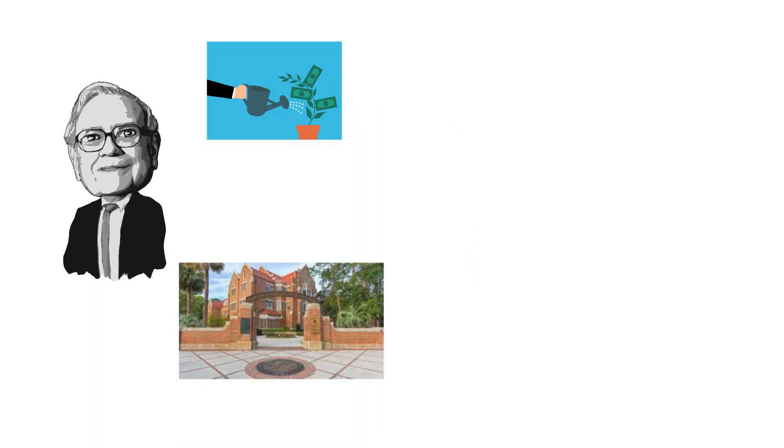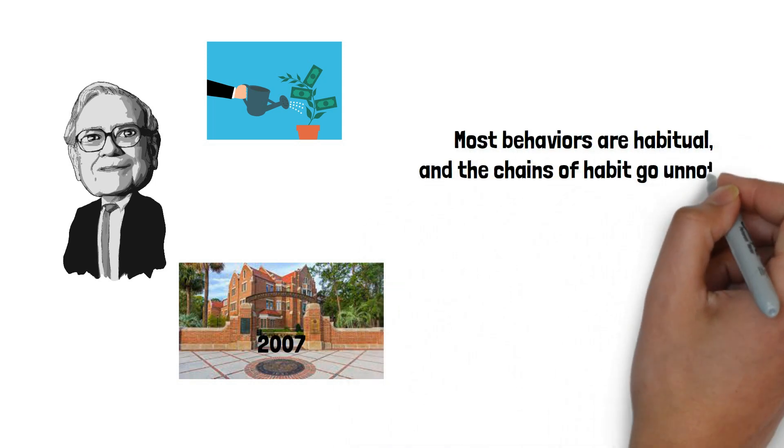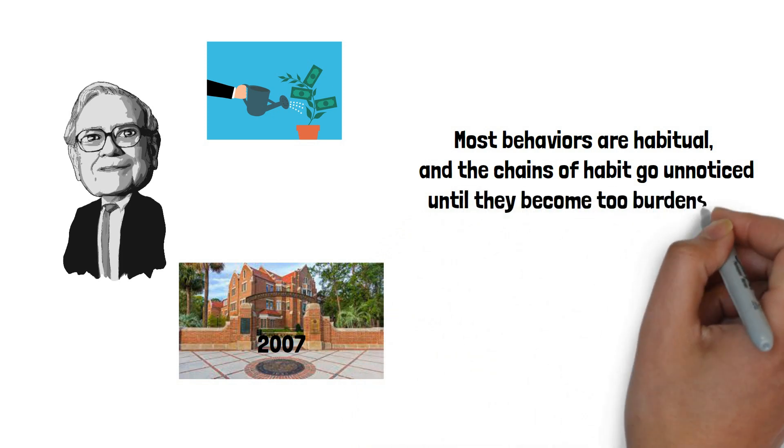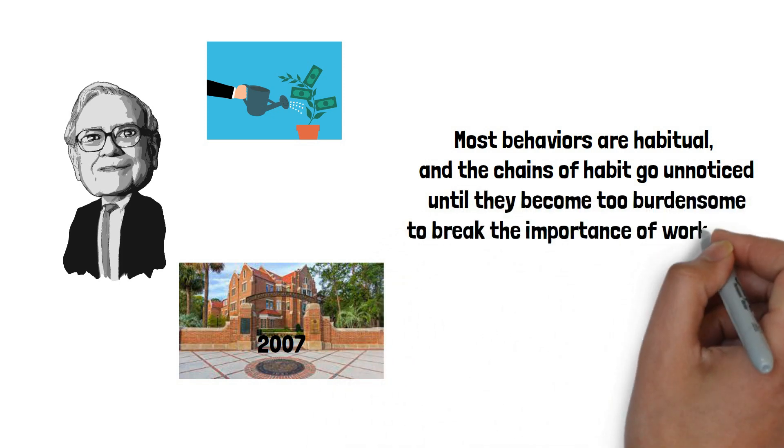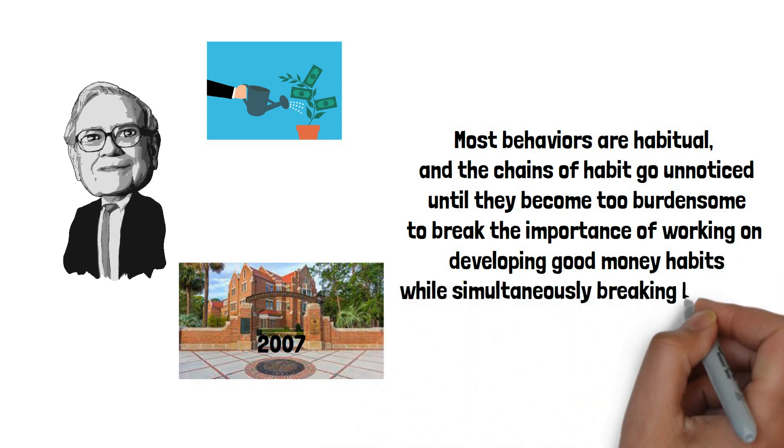Buffett once said in a 2007 speech at the University of Florida that most behaviors are habitual and the chains of habit go unnoticed until they become too burdensome to break, emphasizing the importance of working on developing good money habits while simultaneously breaking bad ones.